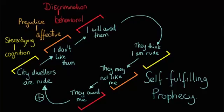To us, our initial stereotype that city dwellers are rude becomes more true as we perceive them to be ruder and ruder over time in response to our own behavior. This is the positive feedback that we see in a self-fulfilling prophecy.